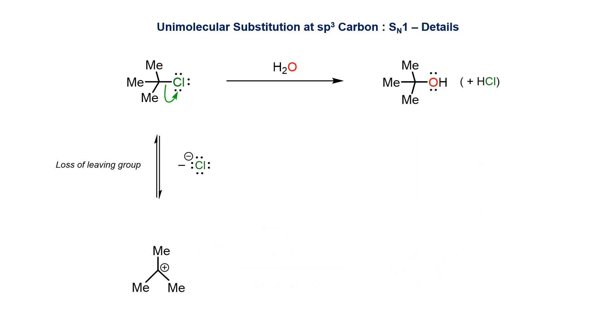The first step, the formation of the carbocation, is rate determining. Here the leaving group breaks away to produce the six-electron tertiary carbocation. This is achievable because of significant electron donation from the nine adjacent beta bonds in the form of hyperconjugation.